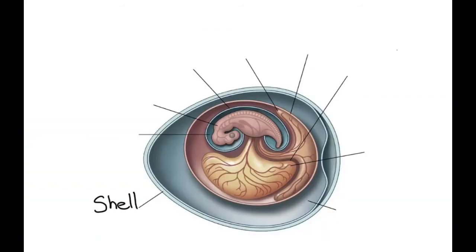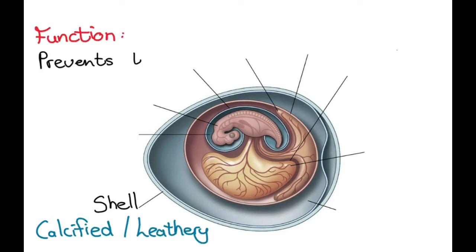Now we're going to start from the outside in. First up is our shell. Remember the shell can be either calcified or leathery, and its function is to prevent the embryo from drying out.